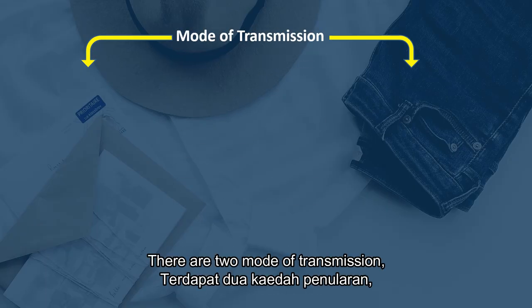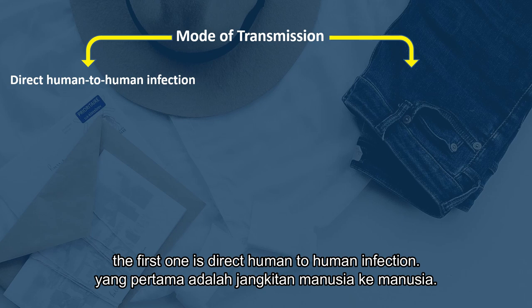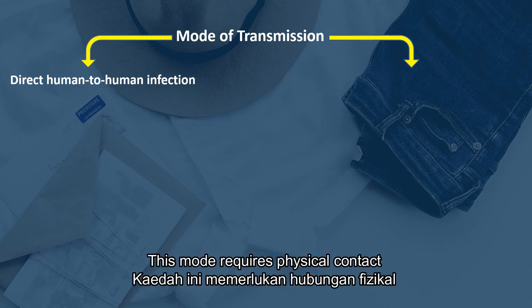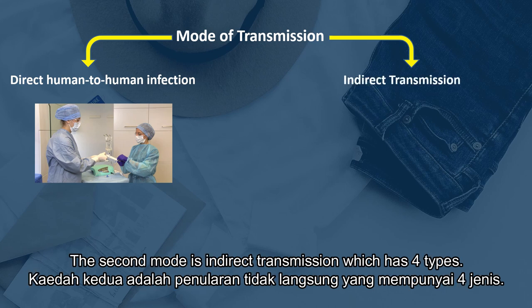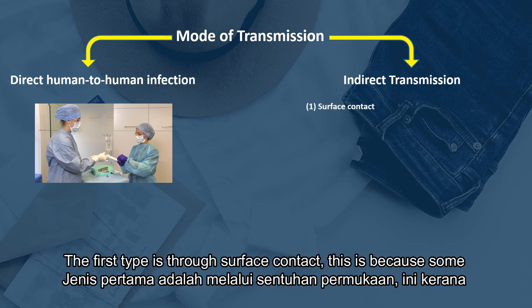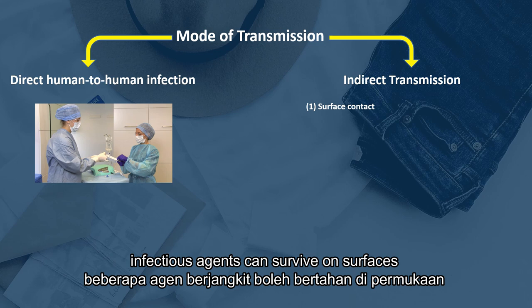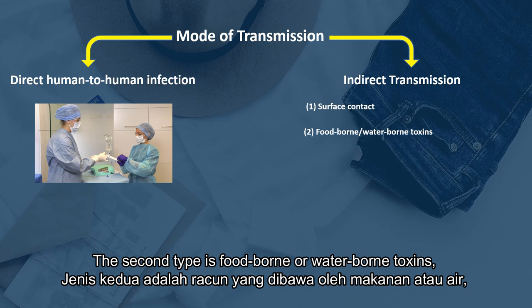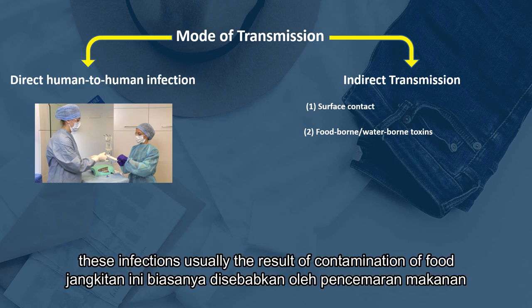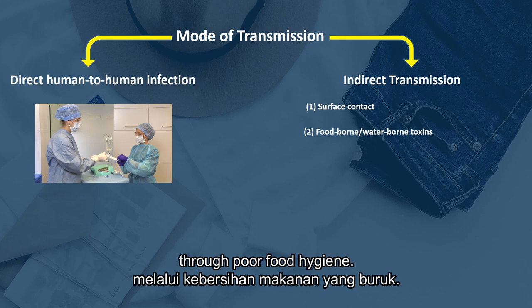There are two modes of transmission. The first one is direct human-to-human infection, which requires physical contact between an infected person and a susceptible person. The second mode is indirect transmission, which has four types. The first type is through surface contact, because some infectious agents can survive on surfaces for extended periods of time. The second type is foodborne or waterborne toxins, usually the result of contamination of food through poor food hygiene.